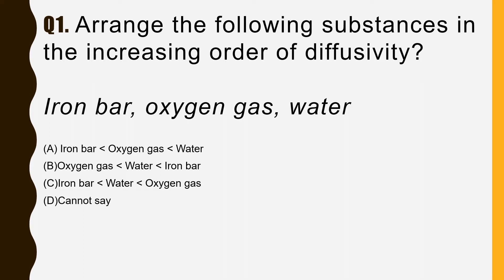This is a very simple question. Diffusion is the intermixing of particles of two different types of matter on their own. The correct option is C — iron bar < water < oxygen gas — because the rate of diffusion is maximum in gases, then in liquids, then in solids. Oxygen gas is gaseous, water is liquid, and iron bar is solid.